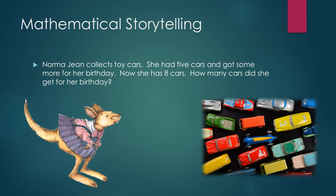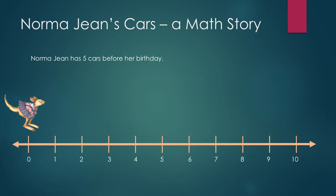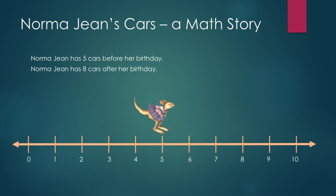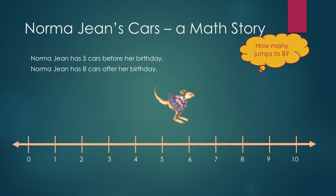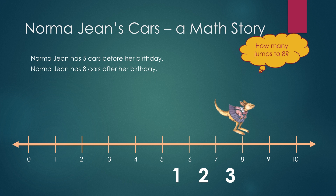Let me tell you a couple of quick stories about my friend Norma Jean. She's a kangaroo. She likes to jump. She collects toy cars and she had five. Then when she got some more for her birthday, now she has eight. The question is, what's the storyline for figuring out how many she got for her birthday? In a classroom, we have a number line in the front of the room and kids hopping along. Had five — how many more is it going to take to be eight? How many hops does that require to move from five where I started to eight where I am? When children do this, and they are the story, and this story is the mathematics, it brings great power to what they remember and what they learned.